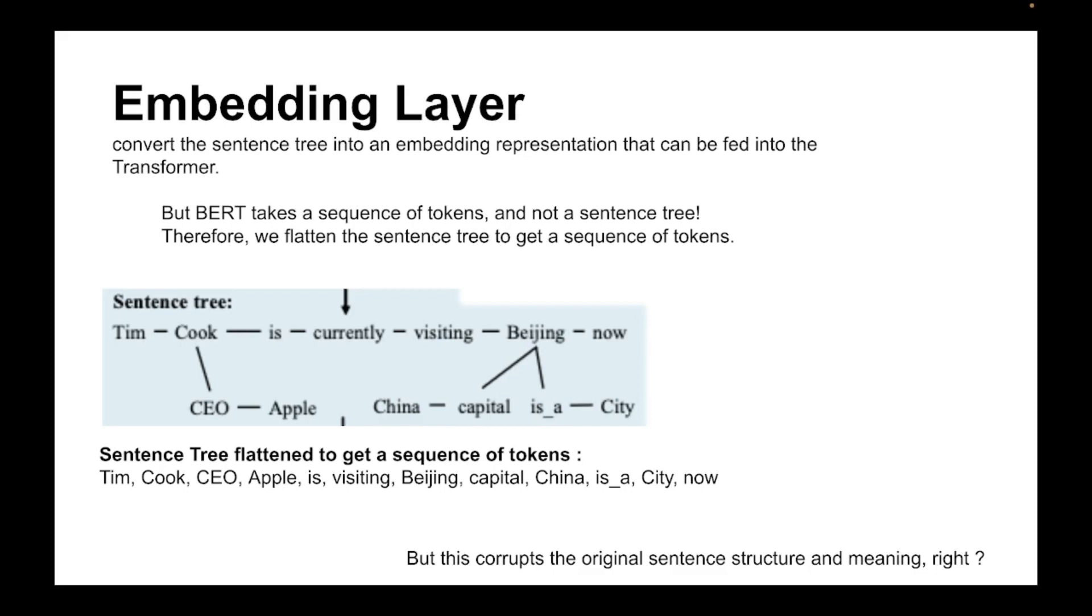The way we flatten is we go from left to right and then do a depth-first search manner and then list down all the tokens. So here you can see Tim Cook, CEO, Apple, and then once we have completed exploring that branch, come back and see is currently visiting Beijing, then capital China, is a city, and then now. So we flattened the sentence tree into this format, so we have a list of tokens.